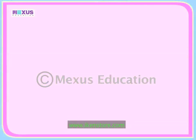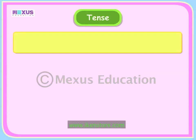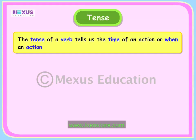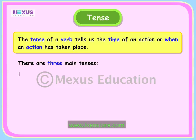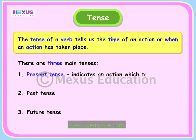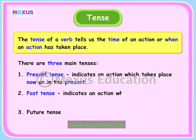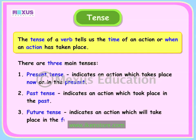First, let us quickly revise the tense of a verb. The tense of a verb tells us the time of an action, or when an action has taken place. There are three main tenses: the present tense, the past tense, and the future tense. The present tense indicates an action which takes place now or in the present. The past tense indicates an action which took place in the past. And the future tense indicates an action which will take place in the future.